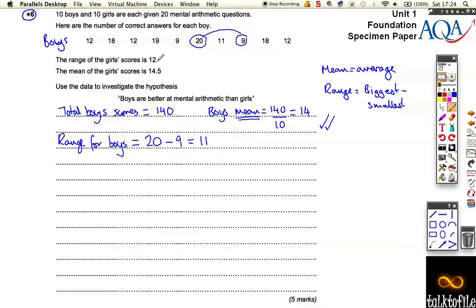For the girls, it was 12. So the way the marks break down is, if you've worked out the range, that's another mark. So we've only got 3 out of the 5, which is not bad.